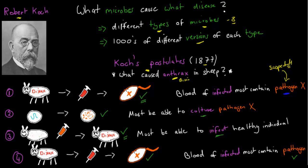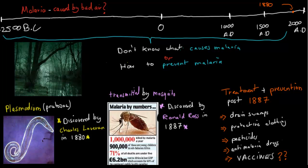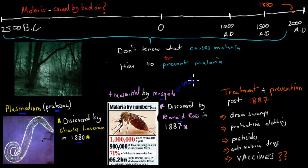Now that we had a way to prove what kind of pathogen caused what kind of disease, people investigated every disease. One example is malaria. For most of our history we believed malaria was caused by bad air, but in the 1880s — just three years after Robert Koch — someone called Charles Laveran figured out that malaria was actually caused by a plasmodium, an example of a protozoa. Then seven years later, Ronald Ross discovered that this plasmodium traveled from person to person via a mosquito, which was the vector.